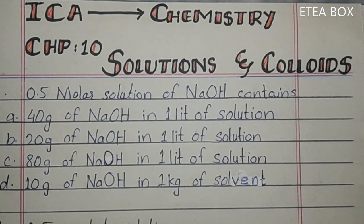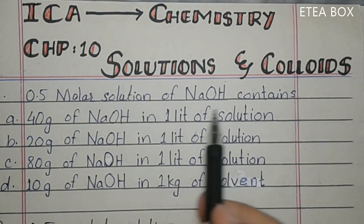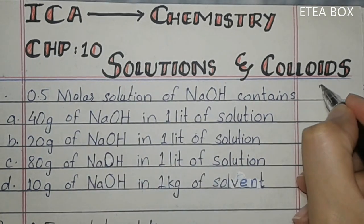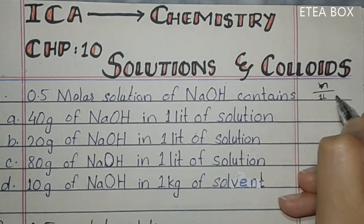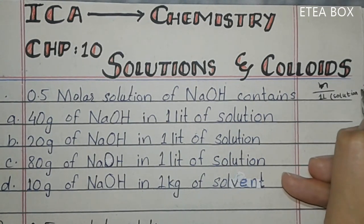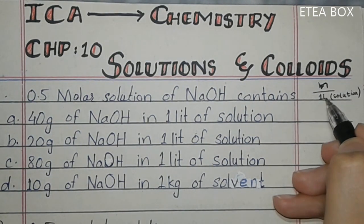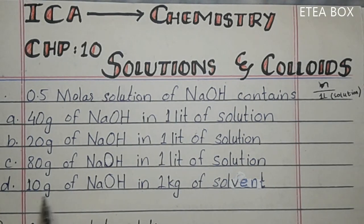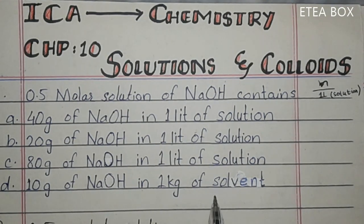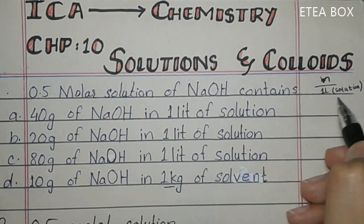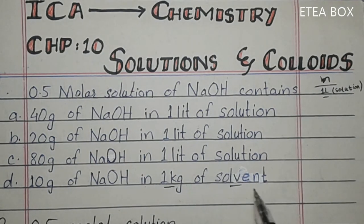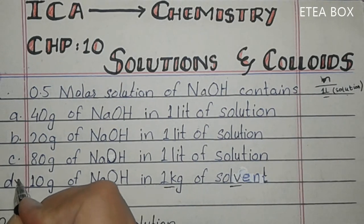Assalamu alaykum students. Today we will solve the MCQs of Solutions and Colloids. MCQ number one: 0.5 molar solution of NaOH contains — now look at here, what is molarity? Molarity is number of moles per liter of solution. This liter is volume. Now look at the D option: 10 gram of NaOH in 1 gram of solvent. This one is incorrect because molarity is in volume, and here it says solvent, but for molarity we need solution.